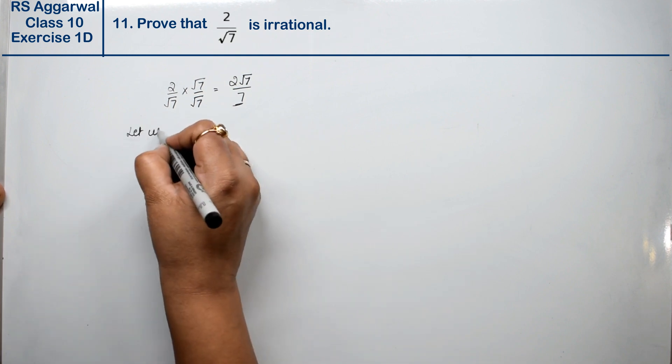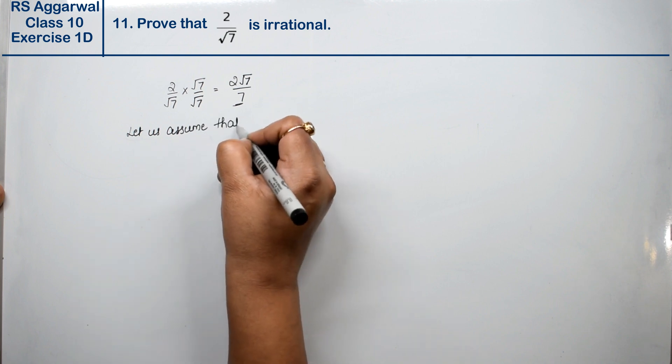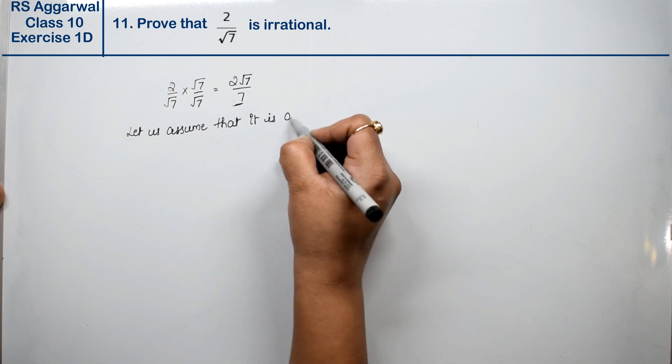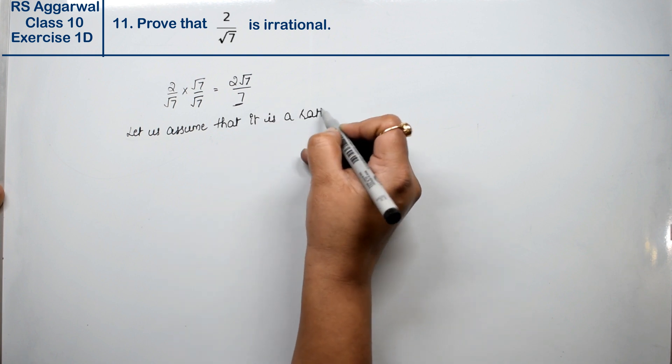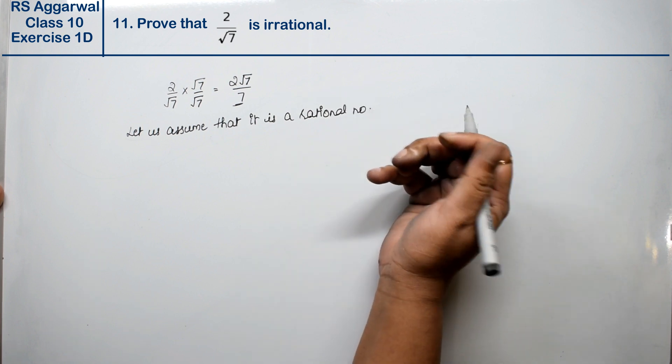Let us assume that it is a rational number. If it is a rational number, then it can be written as p upon q.